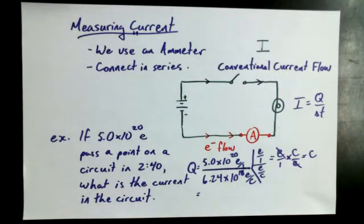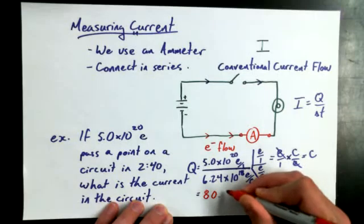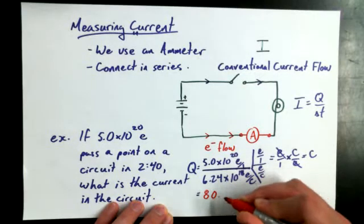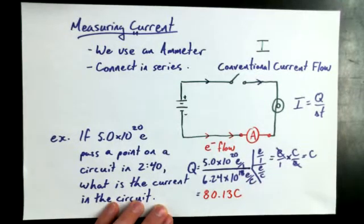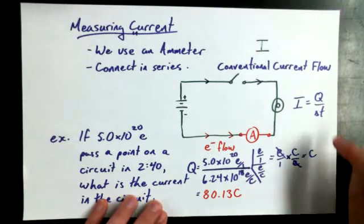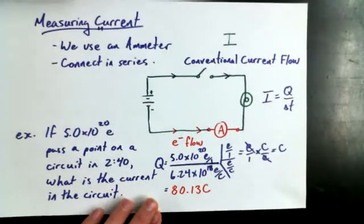What do you get for the Q value? 80 point? Is it 80.13? Oh, yeah. All right. 80.13 coulombs. That's how much charge is going past. What else do I need to figure out if I'm going to calculate the current? I got the Q.